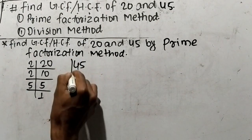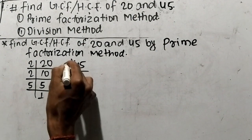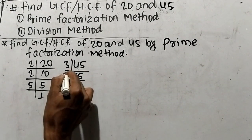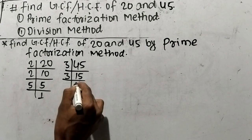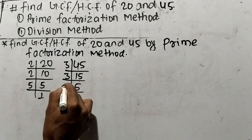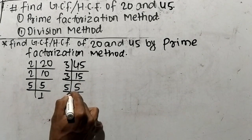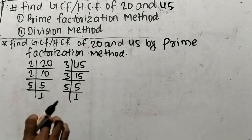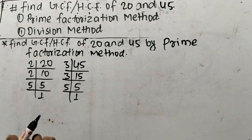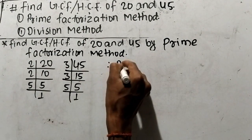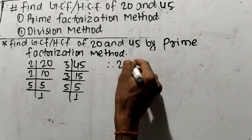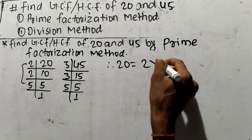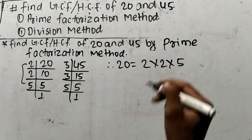In the same way, we shall find out the prime factors of 45. It is 3 times 15 means 45, and 3 times 5 means 15, and 5 times 1 means 5. From these prime factors, we can write 20 is equal to 2 times 2 times 5.